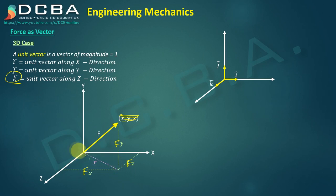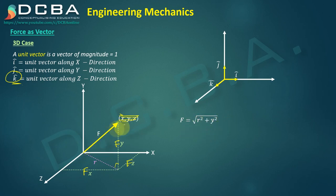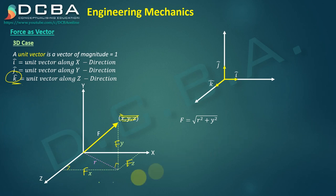Consider the diagonal to be R. By Pythagoras theorem, F equals the square root of R squared plus FY squared, because this forms a right-angle triangle. Further, R squared equals FX squared plus FZ squared.